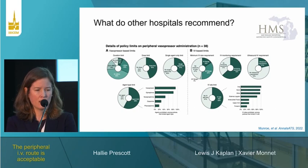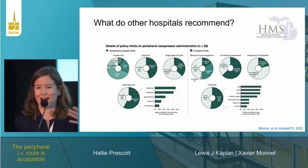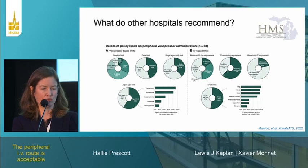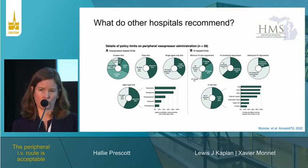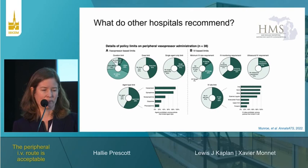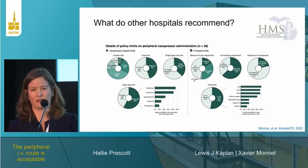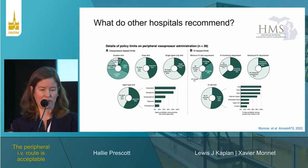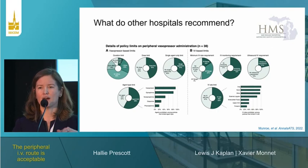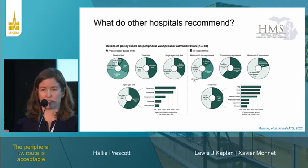Among hospitals providing guidance on peripheral vasopressor delivery, there was huge variation in duration limits, dose limits, whether multiple agents could be given peripherally, and which agents were permitted. Vasopressin was by far the most commonly restricted — there is no local antidote like phentolamine for vasopressin. Epinephrine and norepinephrine were also commonly restricted, while dopamine and phenylephrine were most commonly allowed. Hospitals also varied in IV size requirements, monitoring, and ultrasound requirements. Some protocol and monitoring limits are important to have in place.